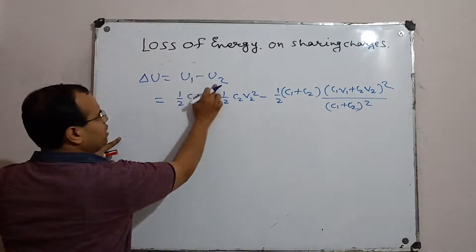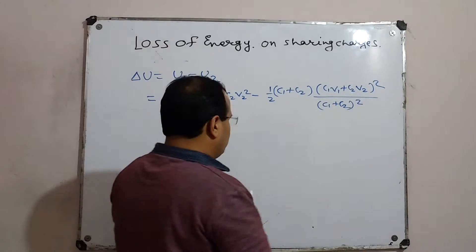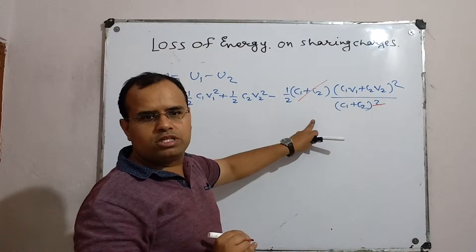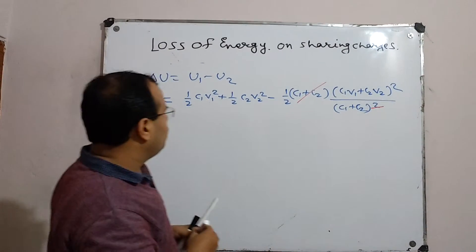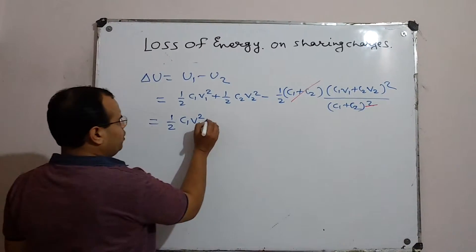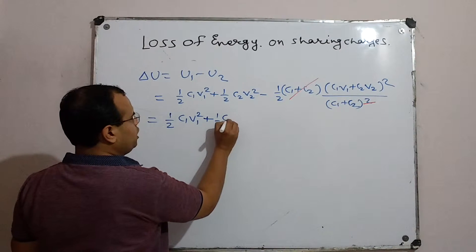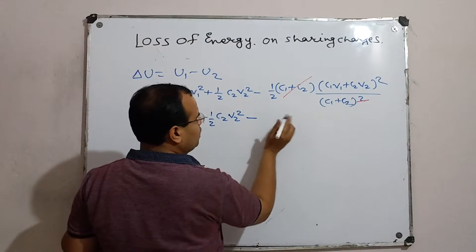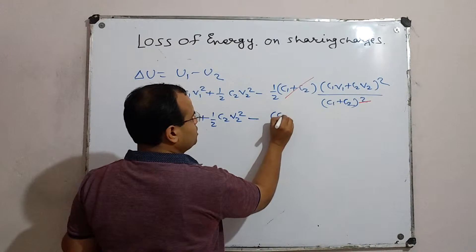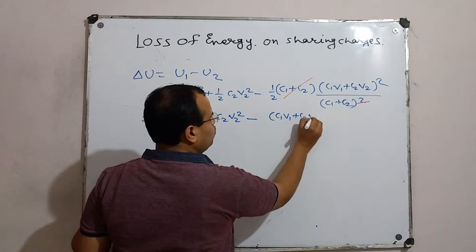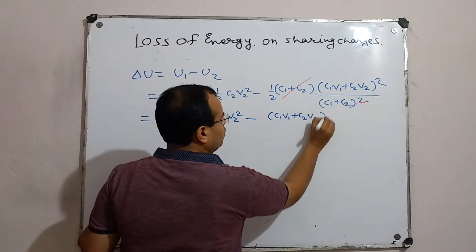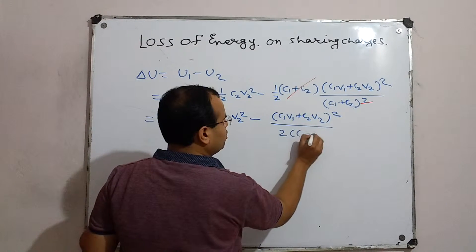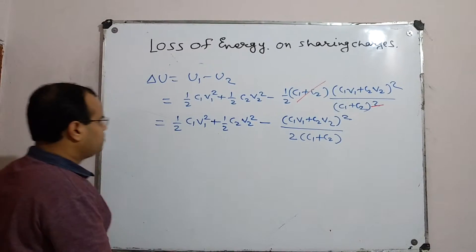So this was the state u1 minus u2. We substituted the values, and here you can see that this 2 and 2, and this C1 plus C2, are cancelled. Now what remains is plus 1 by 2, C2V2 squared minus — this 2 we left out last time, so we have to write it — C1V1 plus C2V2, whole squared, divided by twice (C1 plus C2).